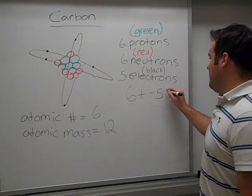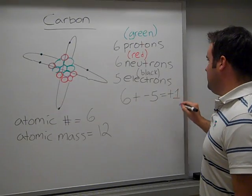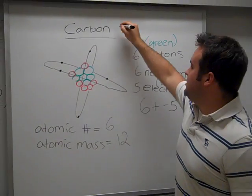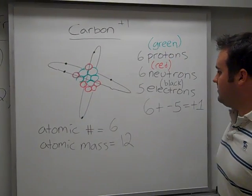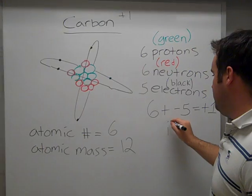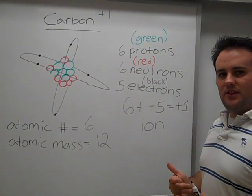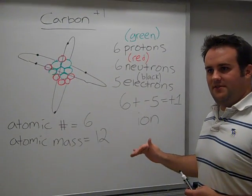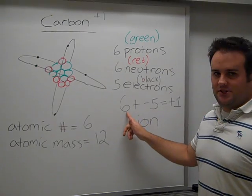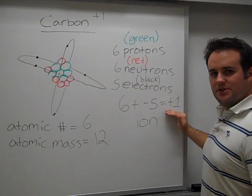You add these two together, and what do you get? You have a positive one charge. So now this atom has an overall charge of positive one. We call this particular atom an ion. An ion is when you change the number of electrons to change the overall charge of the atom itself. Because we got rid of one electron, the positive charge takes over. So now we have an overall charge of positive one.